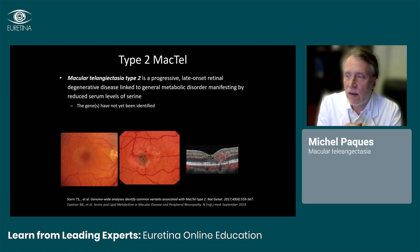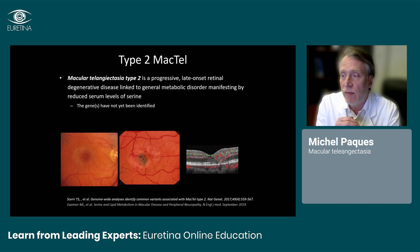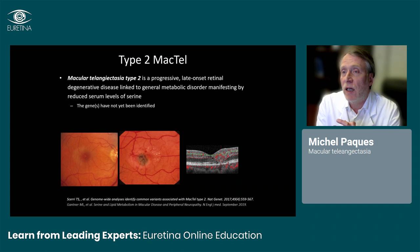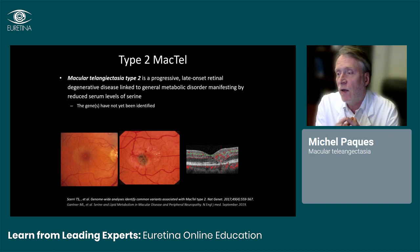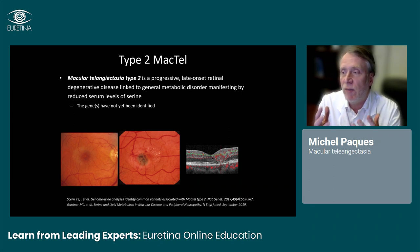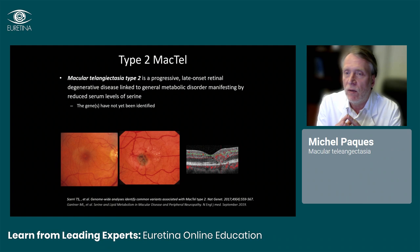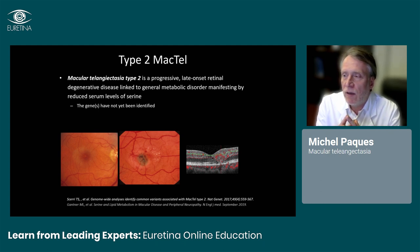Mac-Tel type 2, in contrast, causes much more difficulty in management. There is no commercially available treatment and it may cause profound visual loss. Mac-Tel type 2 is a progressive late-onset retinal degenerative disease. It's associated with a general metabolic disorder, even if it manifests only in the macula. The genes have not yet been well identified. It causes macular damage located mostly in the temporal part of the retina — the same location as type 1 Mac-Tel, but the two diseases have nothing to do with each other.